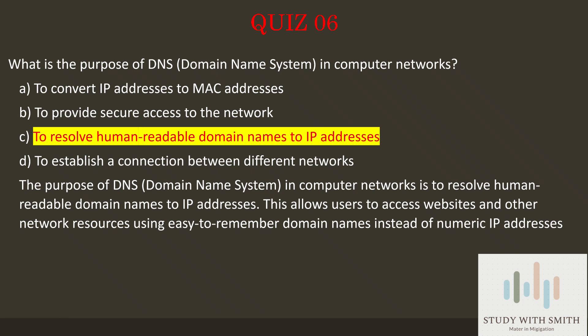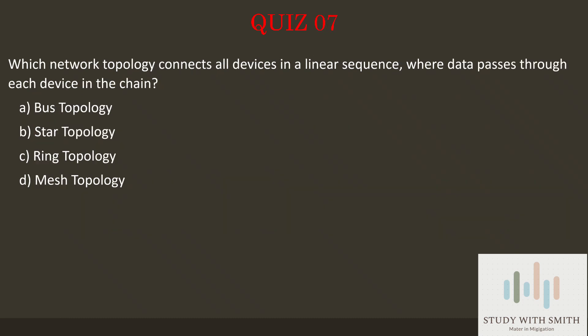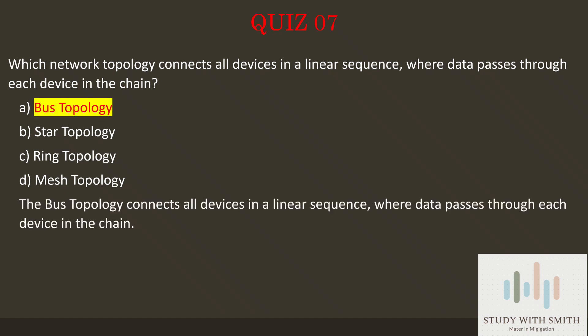Question 7: Which network topology connects all devices in a linear sequence, where data passes through each device in the chain? Pause the video now to select the best answer. The answer is A — Bus topology. The bus topology connects all devices in a linear sequence, where data passes through each device in the chain.